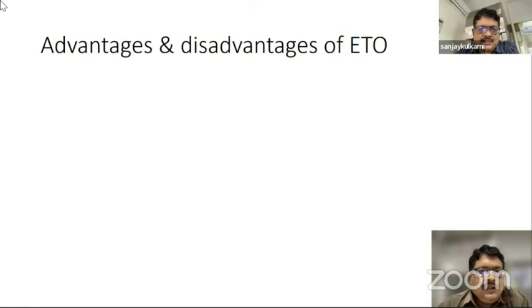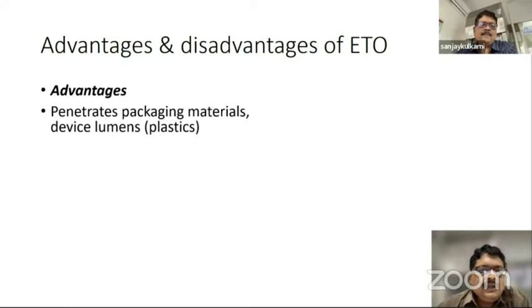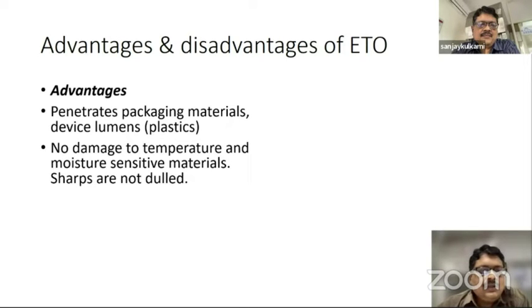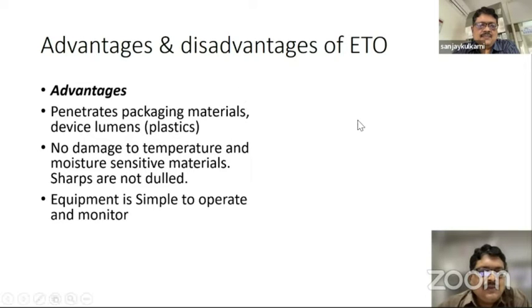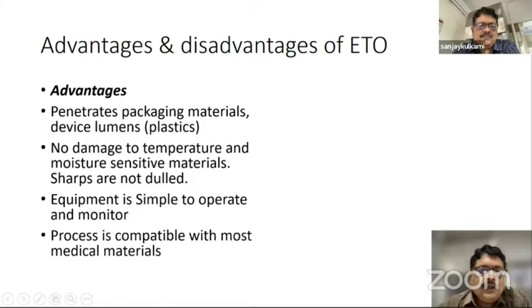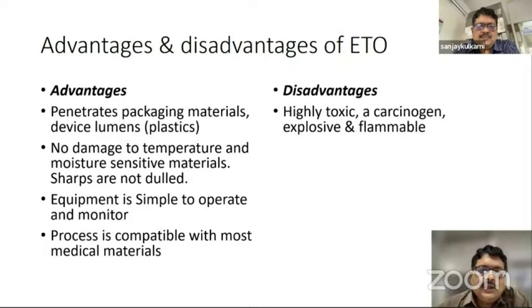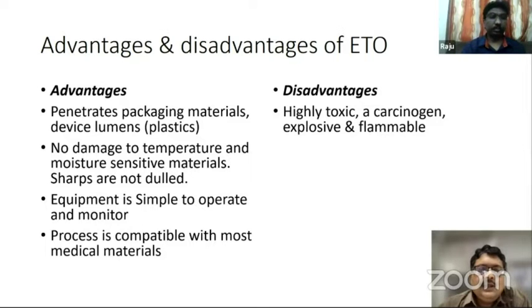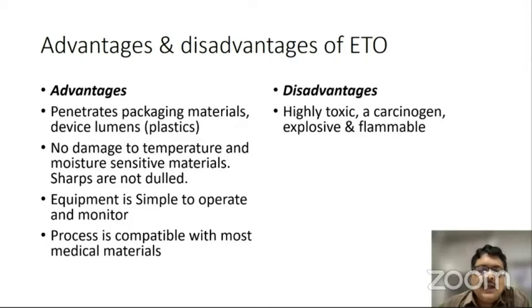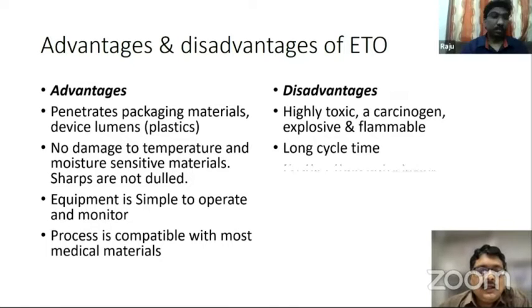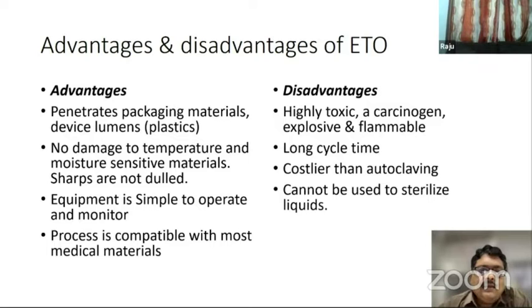ETO has very good penetrating power across various packaging materials and into device lumens, especially plastic devices such as tubings. It does not damage temperature and moisture-sensitive materials. The equipment is also simple to operate and monitor, and the process is compatible with almost all types of medical materials. Among the disadvantages, it is highly toxic, carcinogenic, and flammable, so adequate precautions must be taken. It also has a long cycle time, is more costly than autoclaving, and cannot be used to sterilize liquids.